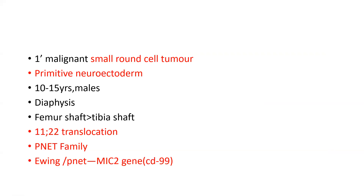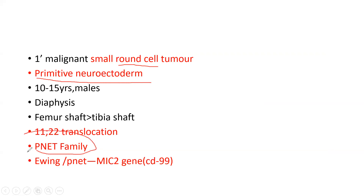Every kid in the E-Wing is round, obese — so round cell tumor. These three terms are interrelated: round cell, primitive neuroectoderm (PNET), and the PNET family. These three things are related to each other.